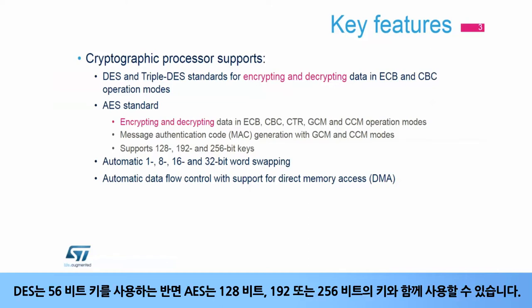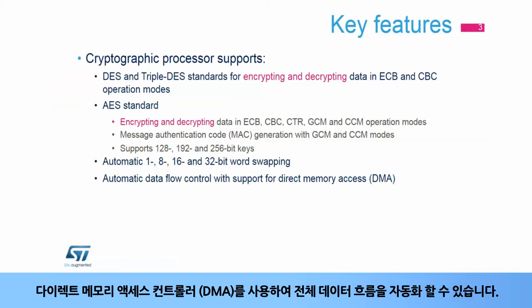DES uses a 56-bit key, while AES, which is more robust, can be used with a key of 128, 192, or 256 bits. A full data flow can be automated with the help of the Direct Memory Access Controller, or DMA.